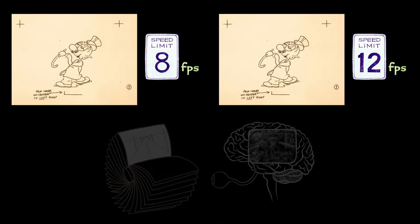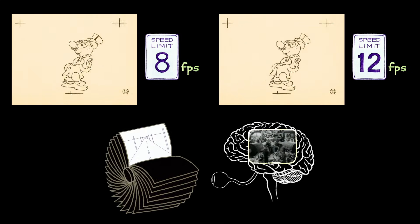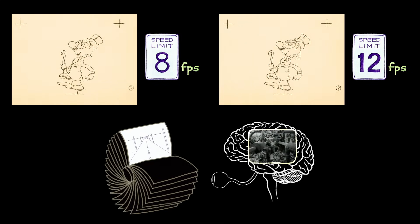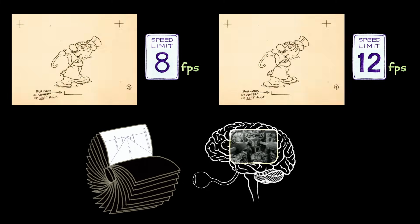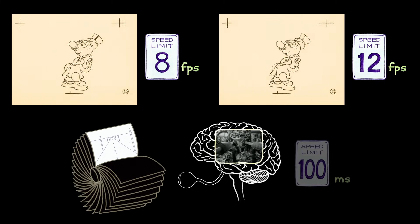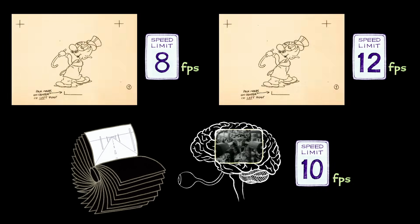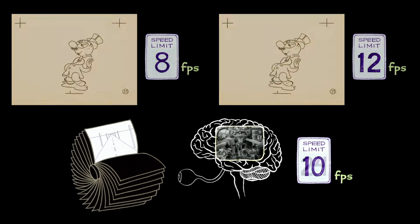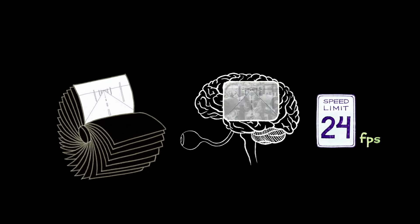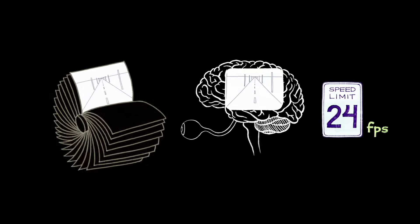This is in the neighborhood of what science has determined to be the general threshold of our awareness of seeing separate images. Generally speaking, we begin to lose that awareness at intervals of around 100 milliseconds per image, which is equal to a frame rate of around 10 frames per second. As the frame rate increases, we lose awareness of the intervals completely and are all the more convinced of the reality of the illusion.